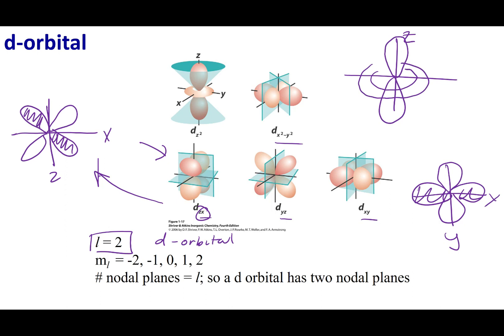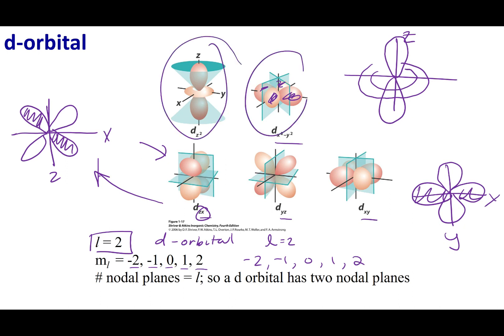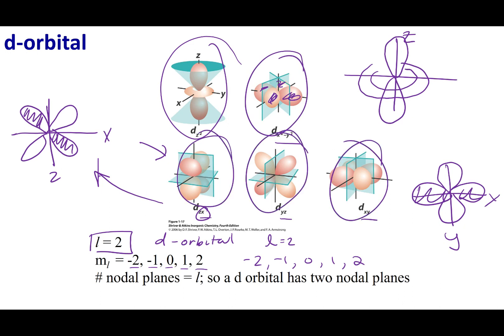Wherever you see these lobes, that is where you expect to find electrons — the most probable locations for an electron with this quantum number. If L equals 2, M sub L goes from negative 2, stepping by whole numbers, to positive 2. So for a D orbital there are 5 versions, with M sub L values of negative 2, negative 1, 0, 1, and 2 — corresponding to the 5 orientations of the D orbitals.